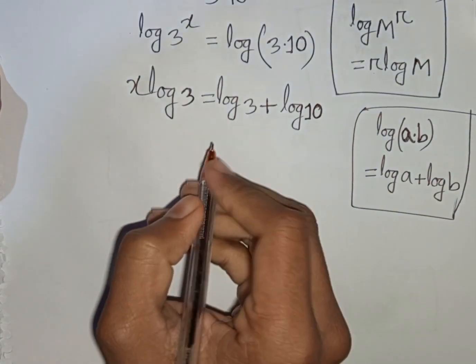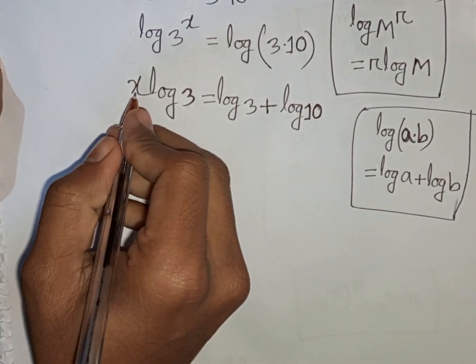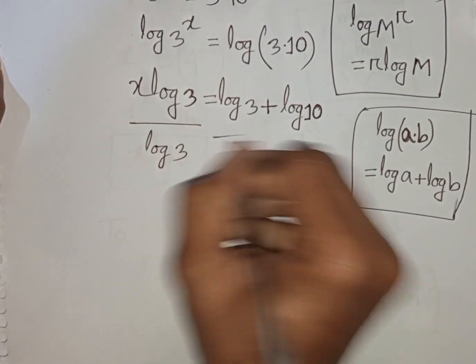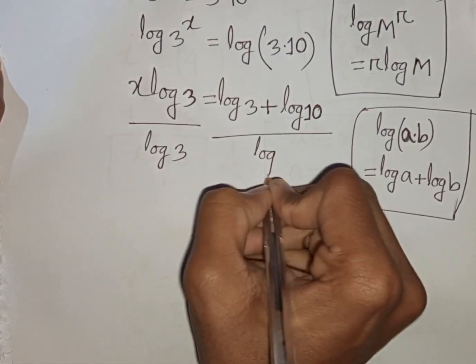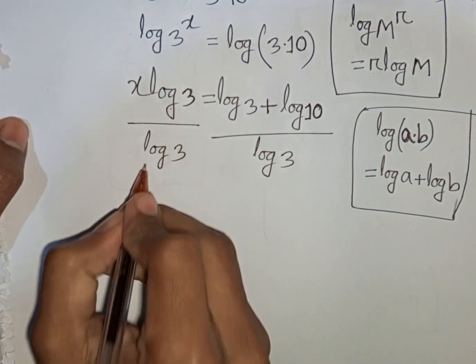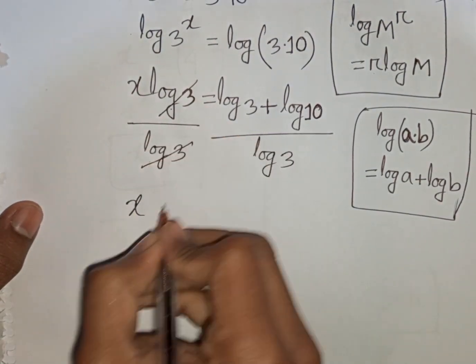Now we divide by log 3 on both sides because we need the value of x. So divided by log 3, divided by log 3.